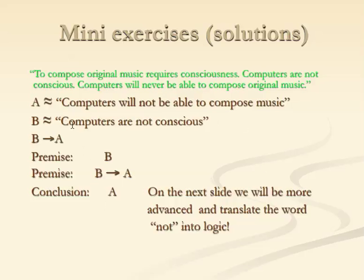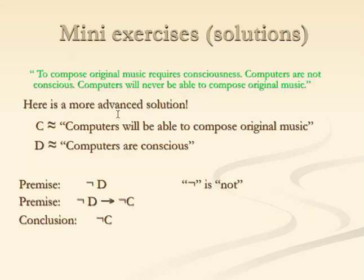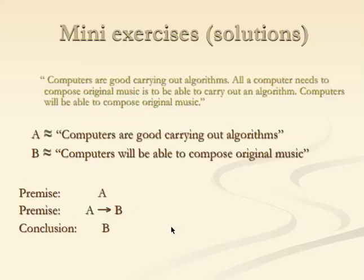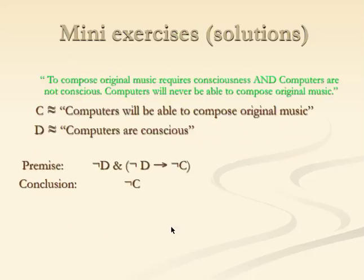Notice there's a NOT involved: 'computers are not conscious' uses NOT B. So the argument becomes slightly more complicated in form, but it is essentially the same valid argument as the rain and street example, now also using negation. The same types of argument can be applied to whether computers can compose music with different premises. You can look at the slides on QM+ for further examples.